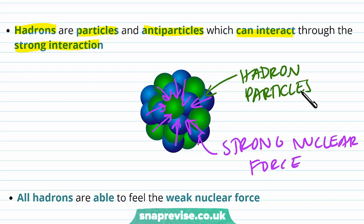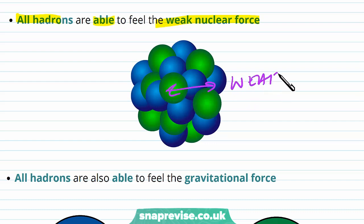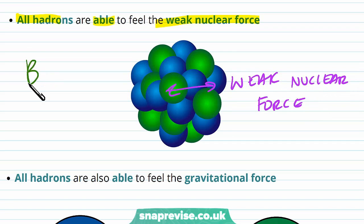Particles which don't feel the strong nuclear force aren't hadrons. All hadrons are also able to feel the weak nuclear force. This makes sense because the particles within the nucleus experience both the strong nuclear force and the weak nuclear force. The weak nuclear force is responsible for processes and changes within the nucleus, such as beta decay.